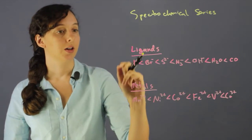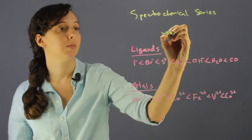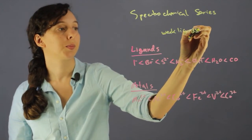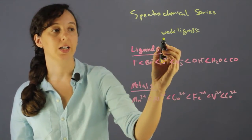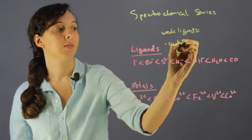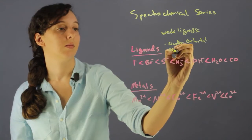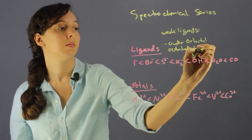The ligands on the left-hand side, or the weak ligands, cause forcible pairing at the 3D electron level, and so they form outer orbital octahedral complexes.